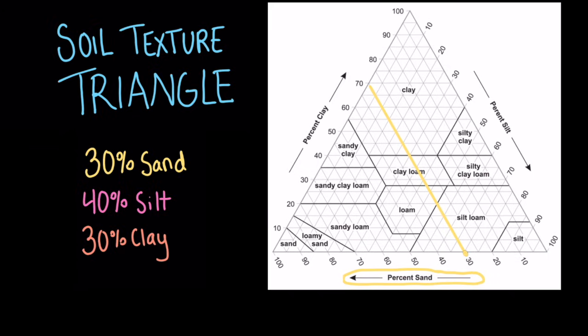Let's do silt. The soil has 40% silt. We'll draw our line through the triangle towards the sand side because of this arrow. So again, we do the same thing. We go along the percent silt line, we find the 40% mark, and we're going to draw a line from 40% to the other side of the triangle. And you can see when we draw that line, these two lines intersect at the clay loam point.